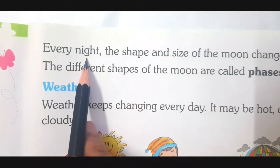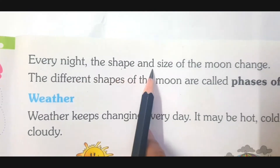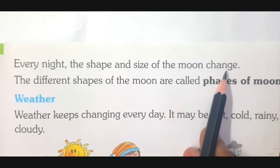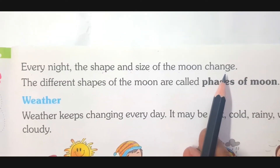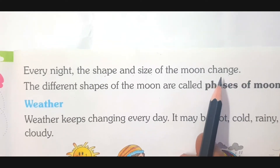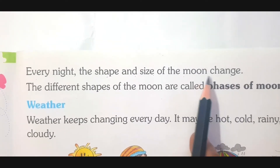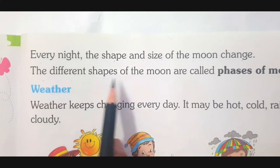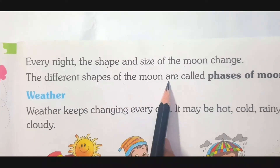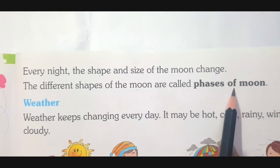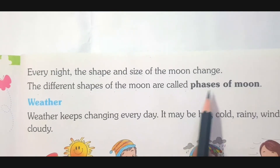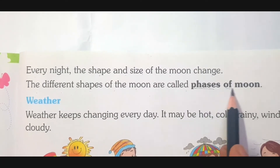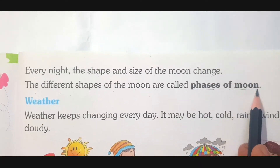Every night the shape and size of the moon changes. From today onwards, children, watch the moon and see how it changes its shape. The different shapes of the moon are called phases of the moon. What do you call the different shapes of the moon? They are called phases of the moon.